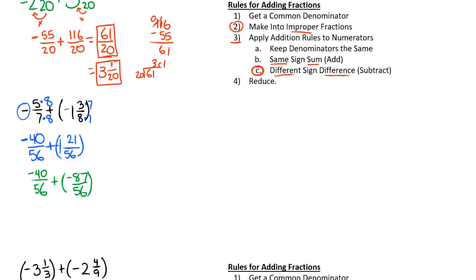Now we look here and apply our addition rule. We have the same sign this time, so we need to find the sum, or add them together. We say 40 plus 87 is 127, and since they're both negative, our solution is going to be negative. So we get negative 127 over 56, which we can leave as that.